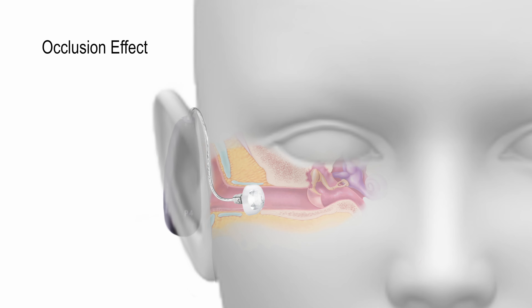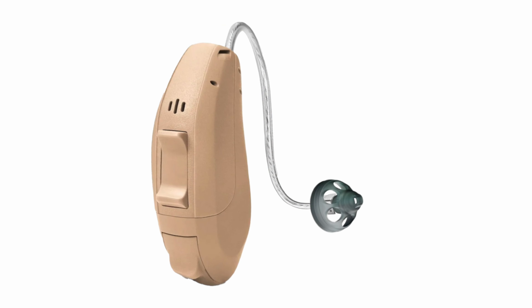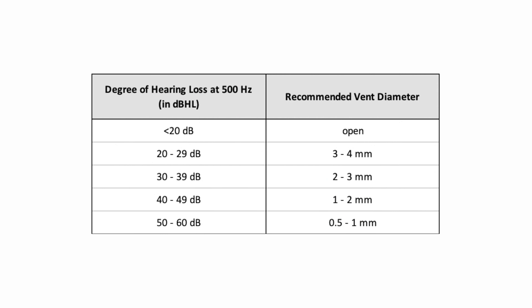First is the occlusion effect. The occlusion effect is simply the increased perception of hearing your own voice and internal body noises like breathing or chewing when something is blocking the ear canals. You can create the occlusion effect by sticking your fingers in your ears and talking. The volume increase in the perception of your own voice is the occlusion effect. When it comes to hearing aids, the occlusion effect occurs if the vent is too small relative to your low frequency hearing loss. Here is a table that illustrates how big the vent needs to be in order to avoid the occlusion effect.